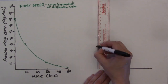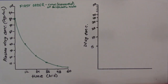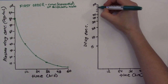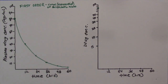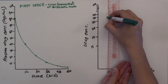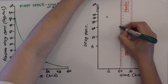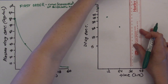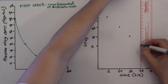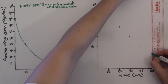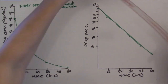But now let's plot these same points on a graph with the y-axis on a logarithmic scale. Again, at 0 hours the concentration is 80 micrograms per milliliter. At 12 hours, 40 micrograms per milliliter. At 24 hours, 20 micrograms per milliliter. At 36 hours, 10 micrograms per milliliter. At 48 hours, 5 micrograms per milliliter. And at 60 hours, 2.5 micrograms per milliliter. Now look — I get a straight line.